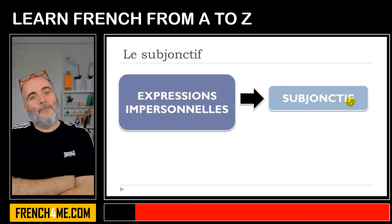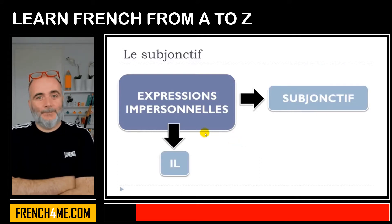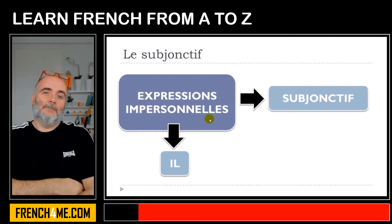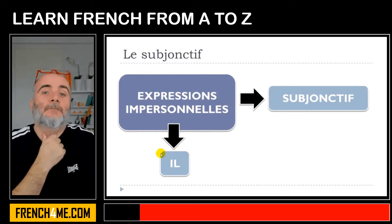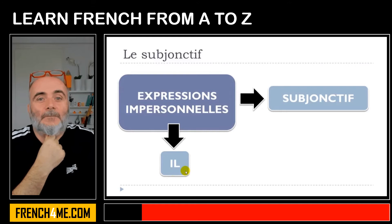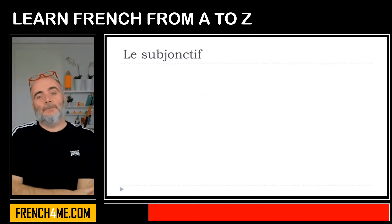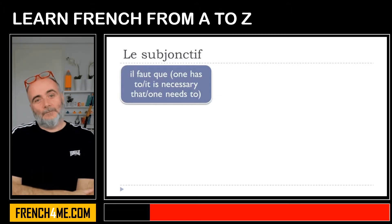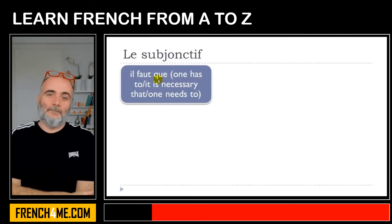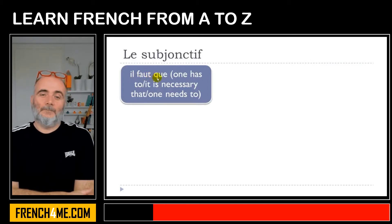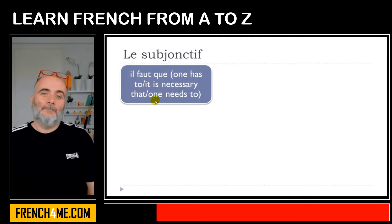We are talking here about expressions impersonnelles followed by le subjonctif. Keep in mind that expressions impersonnelles are structures conjugated only at the il form — je, tu, nous, et vous don't exist. It's only il. For example: il faut que — one has to, it is necessary that, one needs to.